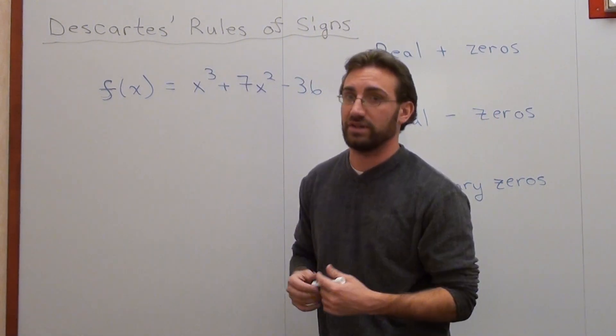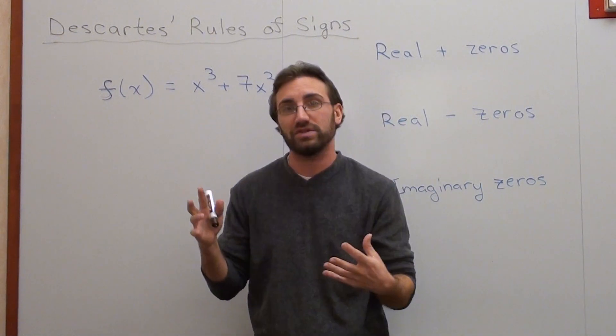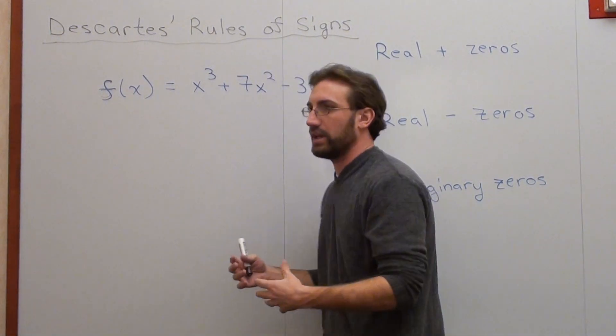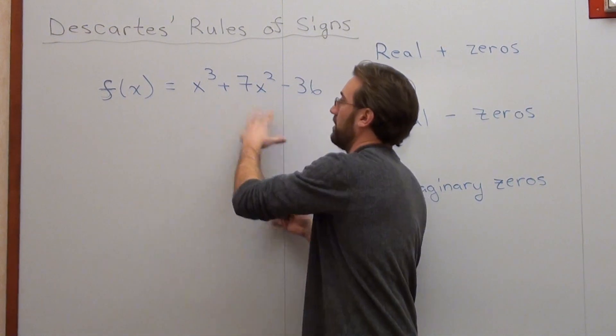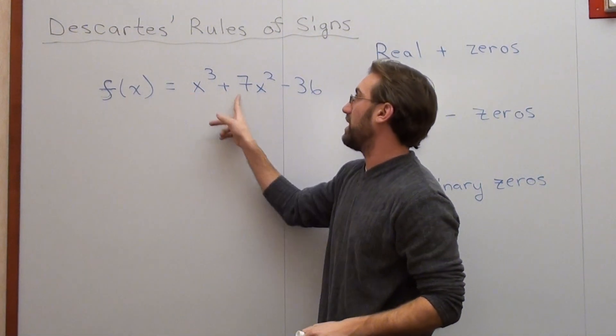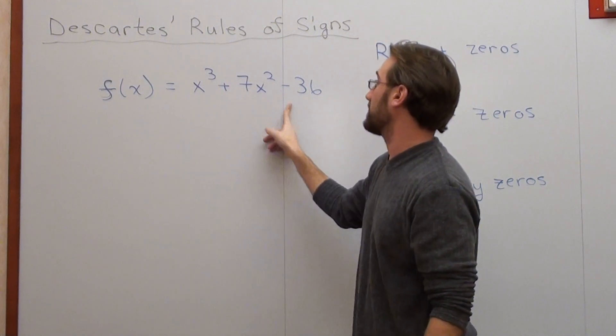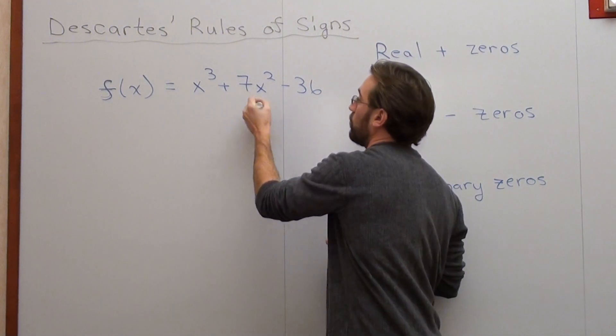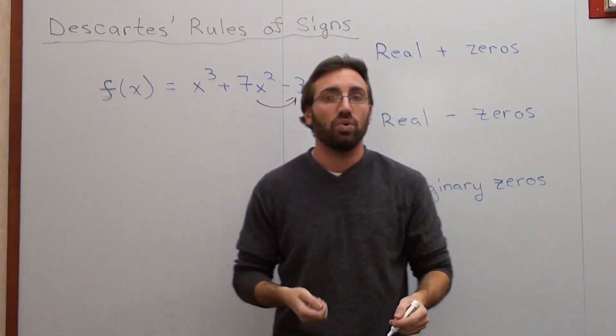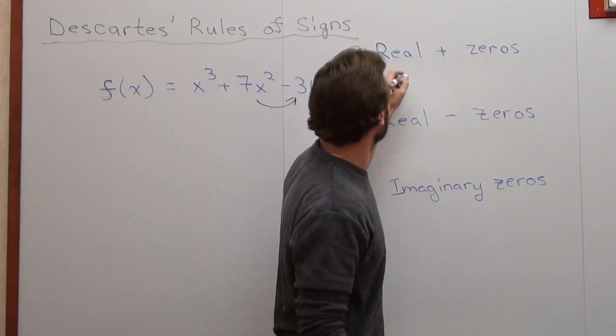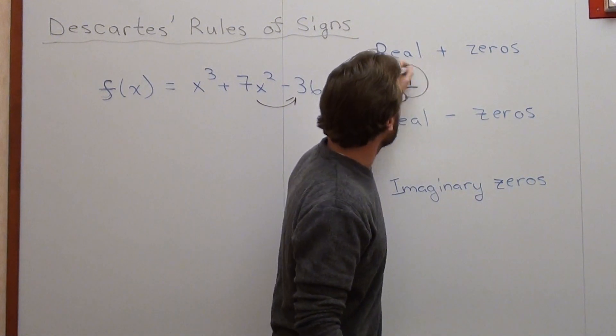To find real positive zeros, all you're doing is seeing how many sign changes there are in the polynomial. This goes from positive to positive, so it's not a sign change. This goes from positive to negative, so that's one sign change, which means there's one real positive zero. That's pretty much it.